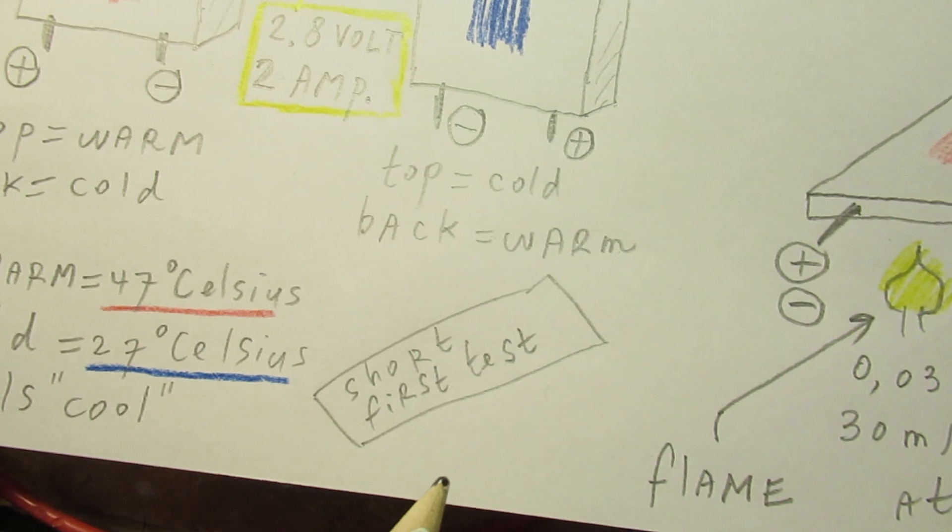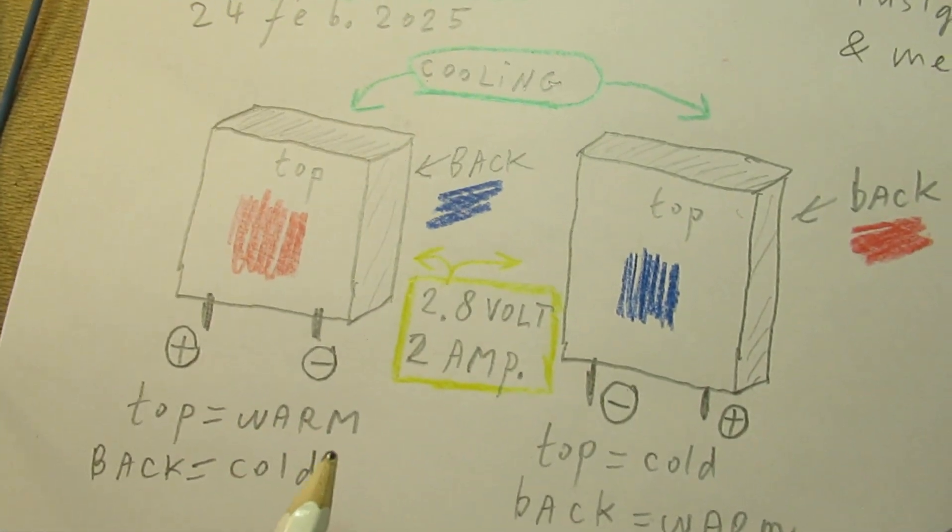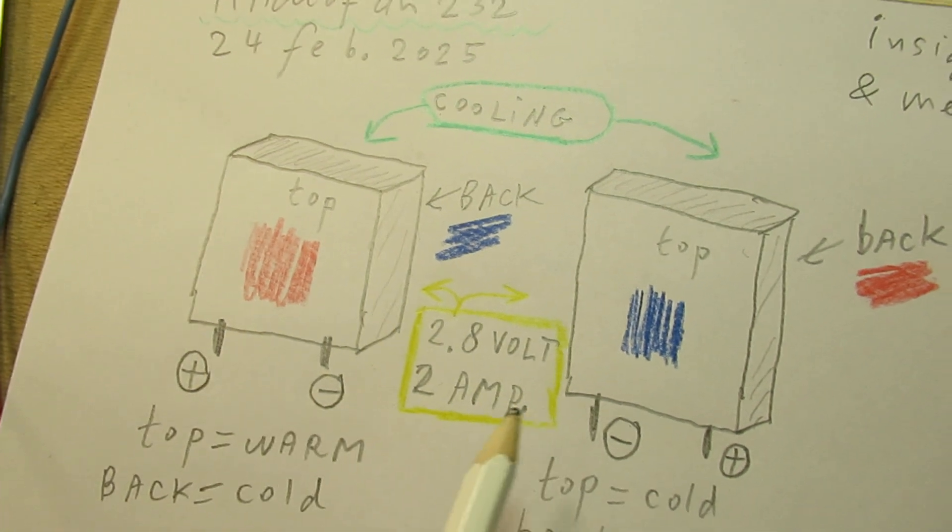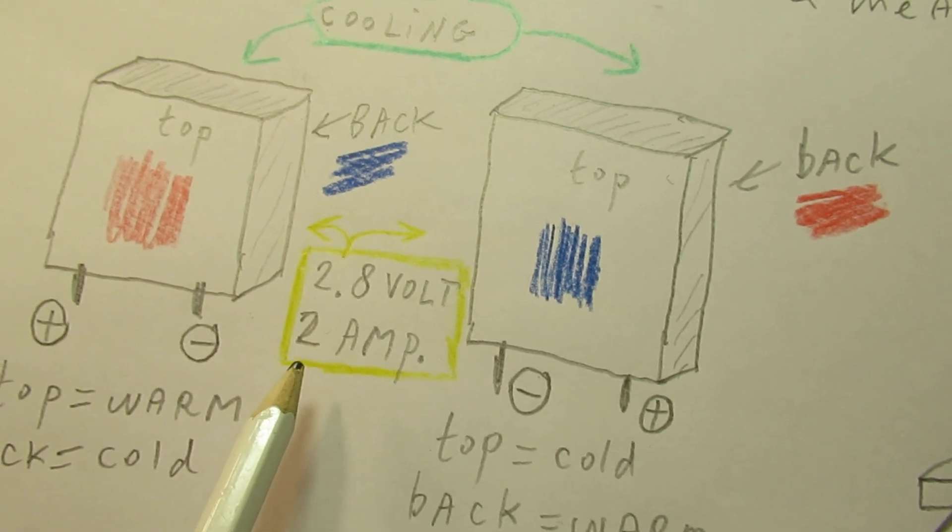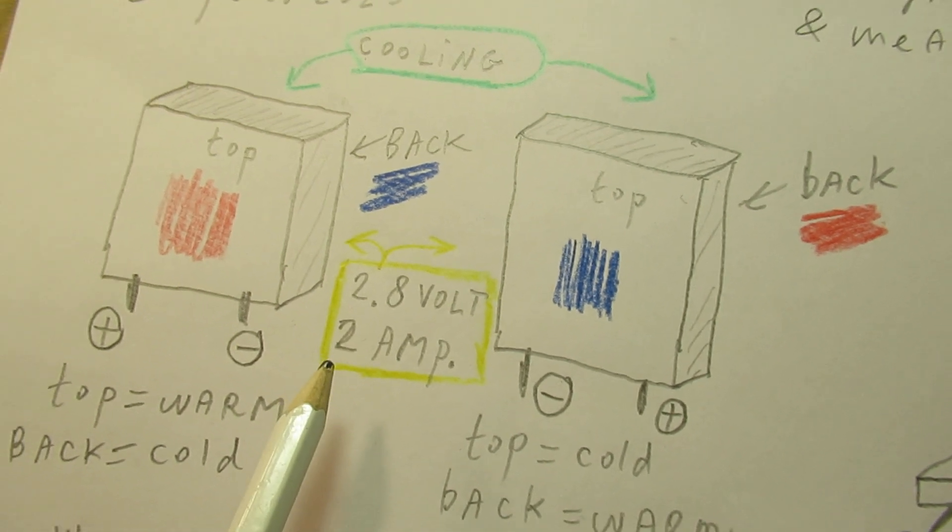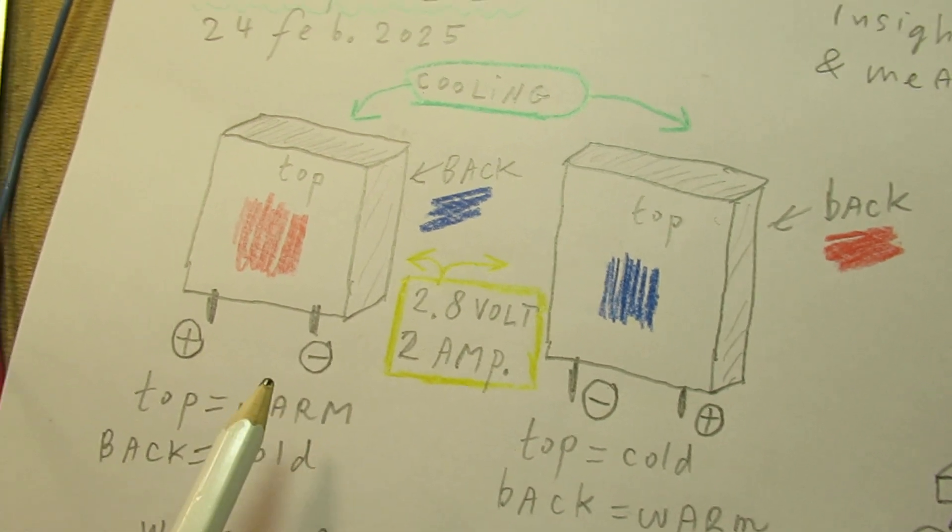That's important to say. And in this situation the Peltier element took 2.8 volts at approximately 2 ampere. That is, say 6 watts, in the order of 6 watts.